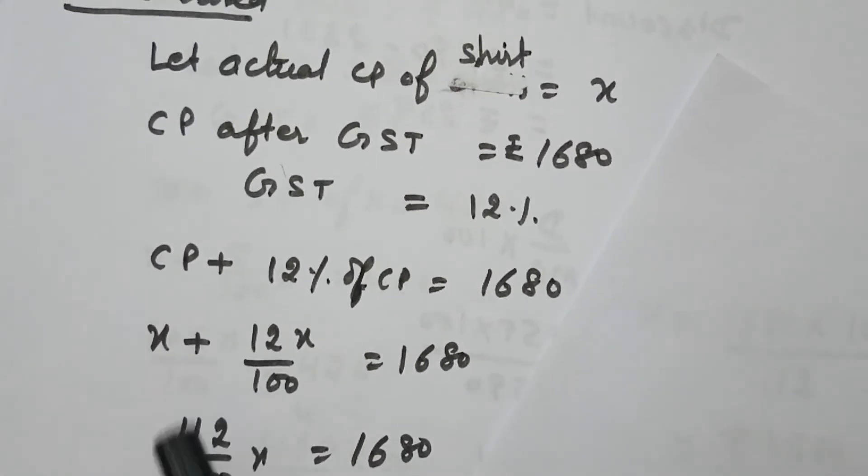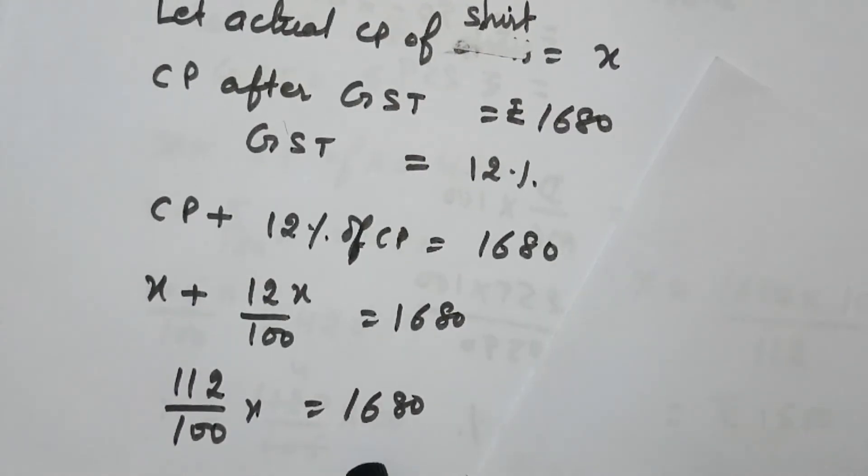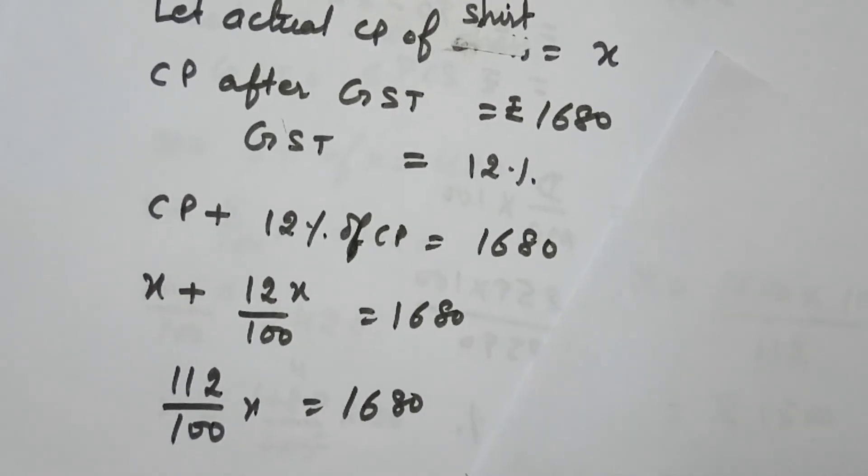After taking LCM, it becomes 112 upon 100X equals 1680. Now this 100 will multiply with 1680 and 112 will divide this.